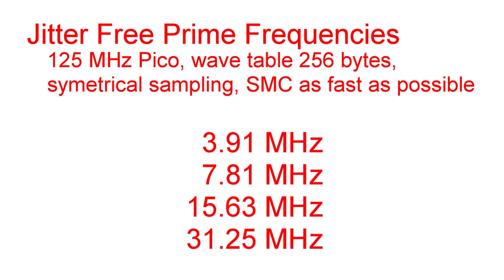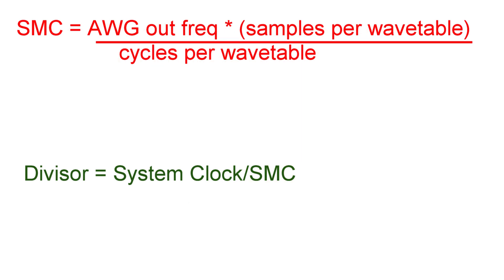we get the following jitter-free prime frequencies using 125 megahertz Pico, 3.91 megahertz, 7.81 megahertz, 15.63 megahertz, and 31.25 megahertz.